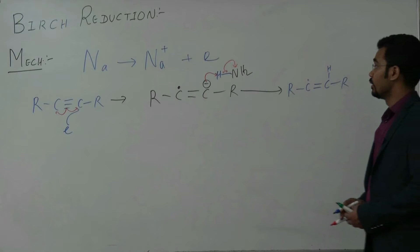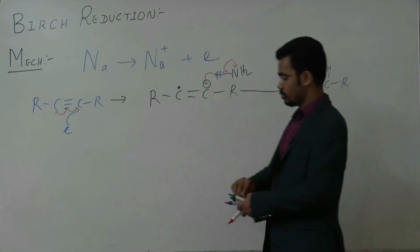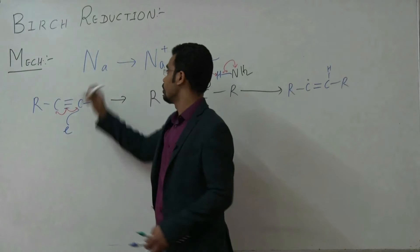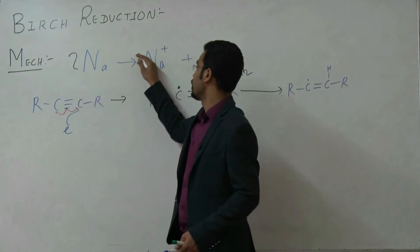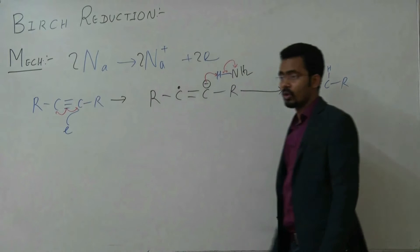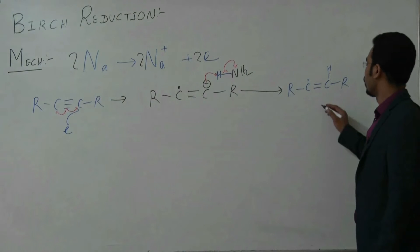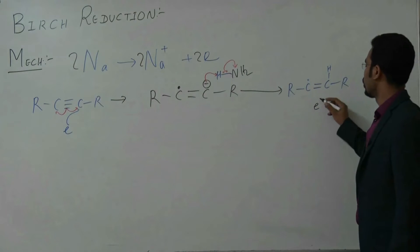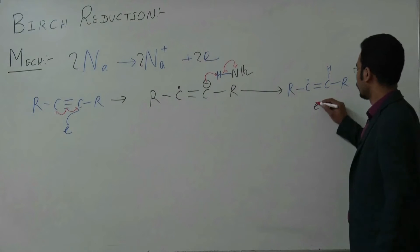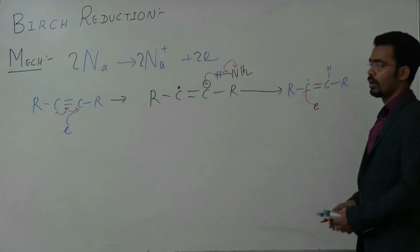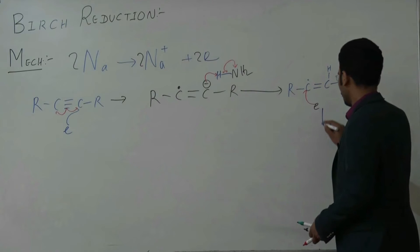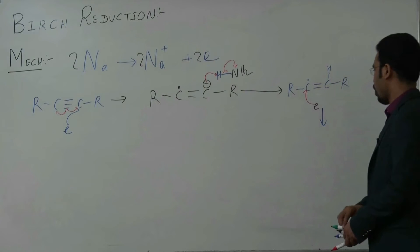Now you have another sodium atom — so two moles of sodium are used — and how many electrons will be produced? Two electrons. So you have an excess of electrons, and this second electron will combine with this carbon to form another intermediate.